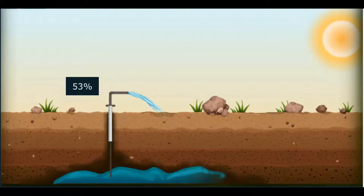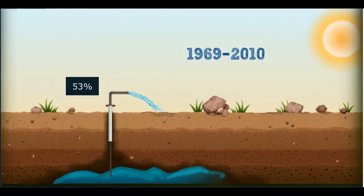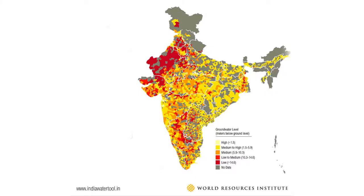Groundwater use by the agricultural sector grew tenfold between 1969 and 2010. More than 100 out of India's 640 districts are officially groundwater-stressed. This extreme and increasing groundwater scarcity drives the need to boost water productivity in agriculture.